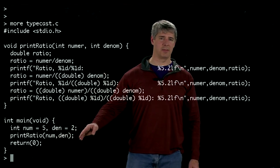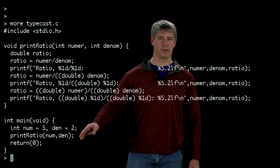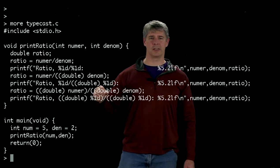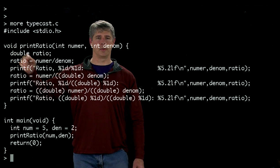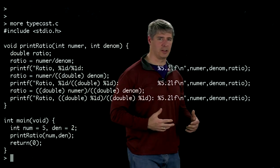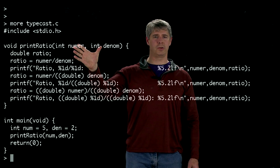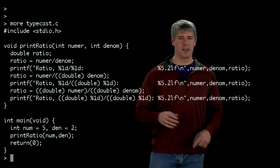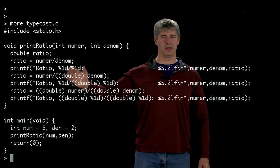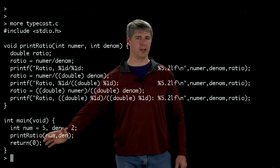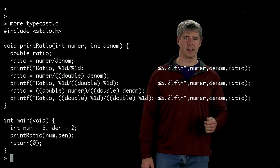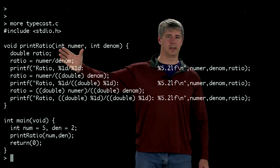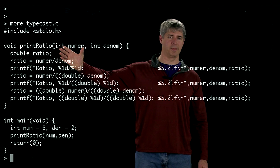All the action is happening in the helper function printRatio. It's type void because it's not going to return any values, and it takes two arguments called numer and denom. These argument names don't have to be the same as the argument names down here, but they do have to be the same data type - both are defined as type int.